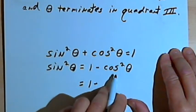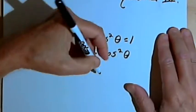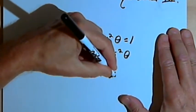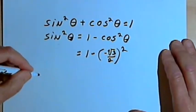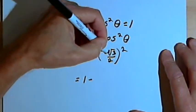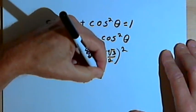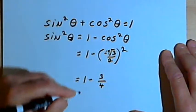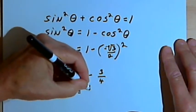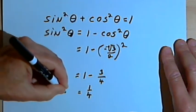Let's plug in the value for cosine of theta — that was negative square root of 3 over 2. We want to square that, so we're going to have 1 minus: negative square root of 3 squared is 3, and 2 squared is 4. So that's 1 minus 3 fourths, which equals 1 over 4. And that's the sine squared of theta.